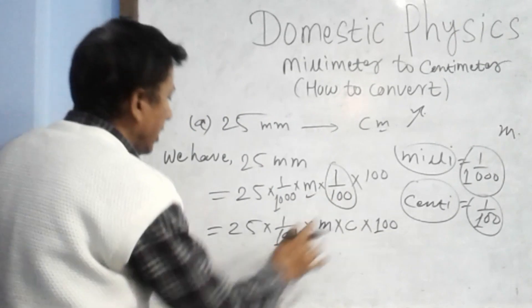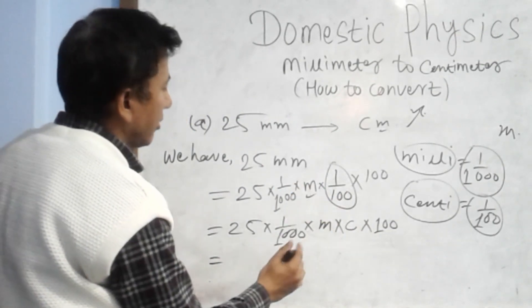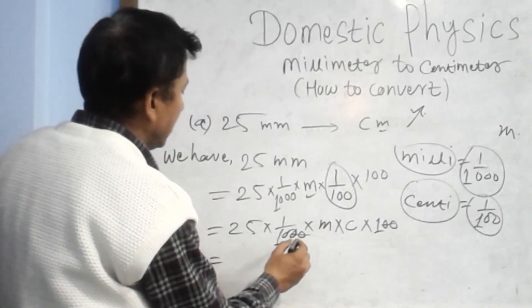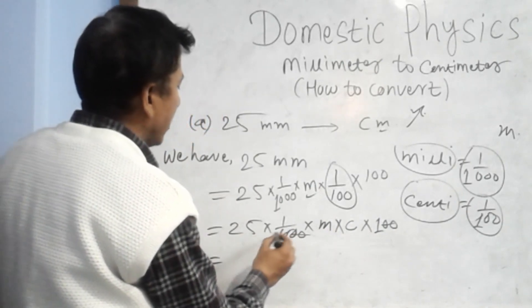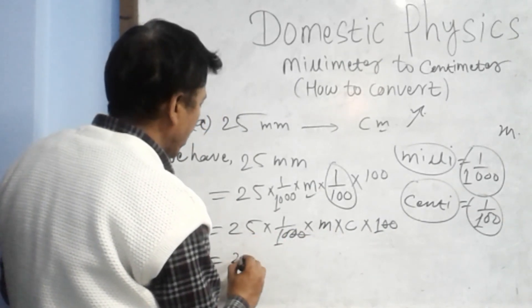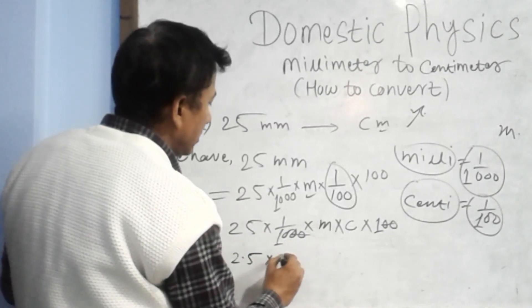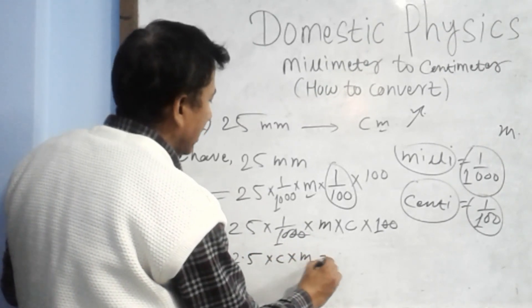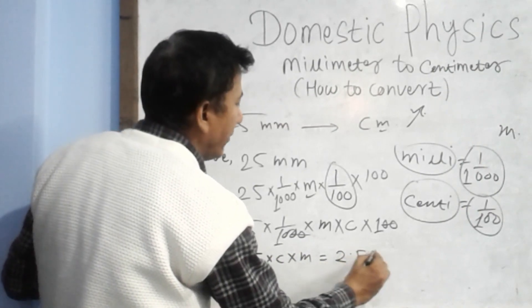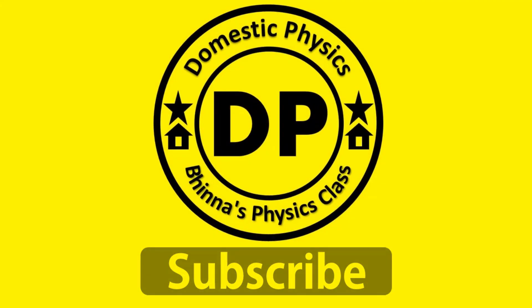So, we have a calculation here. This one is a calculation. So, we will cut the garden and it is there. Now, 2.5 is equal to 2.5.